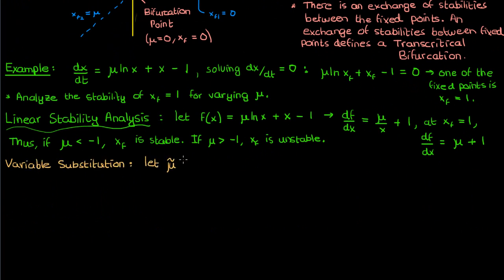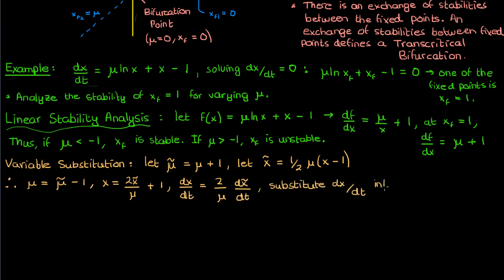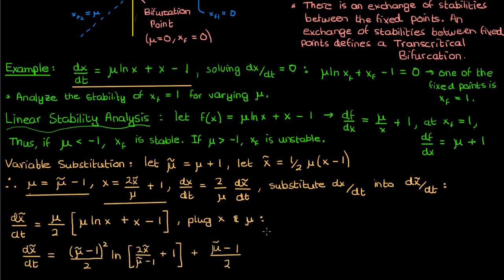We let μ̃ equal μ plus one, and x̃ equal one-half of μ times (x minus one). In that case, μ equals μ̃ minus one, and x equals 2x̃ over (μ plus one). Additionally, dx/dt equals (2/μ) times dx̃/dt. Plugging dx/dt into the equation for dx̃/dt, we find dx̃/dt equals μ/2 times (μ ln(x) + x − 1). We then substitute x and μ in terms of x̃ and μ̃ and perform simplifying algebra.